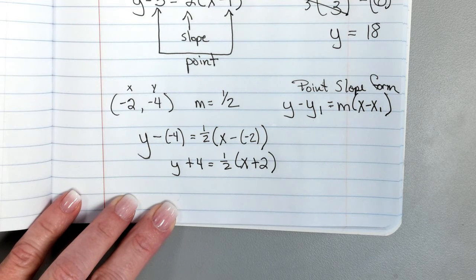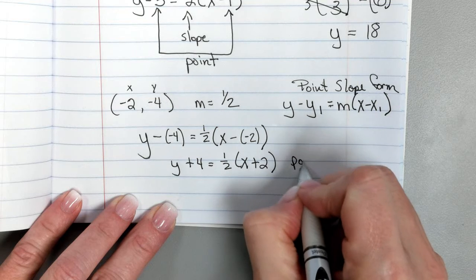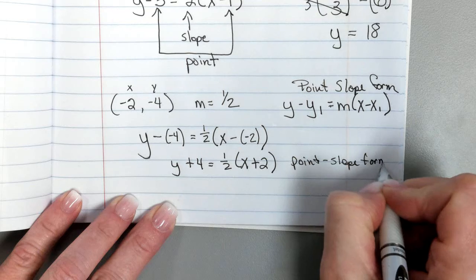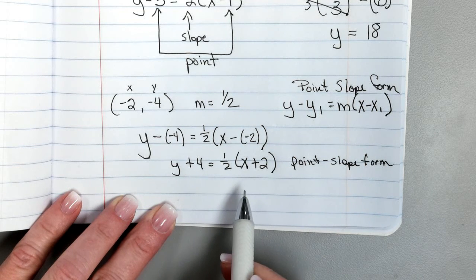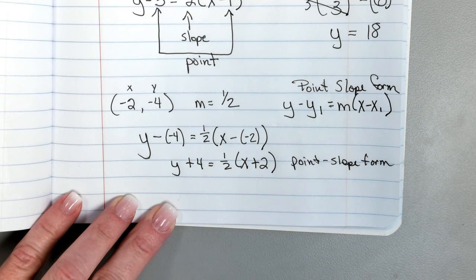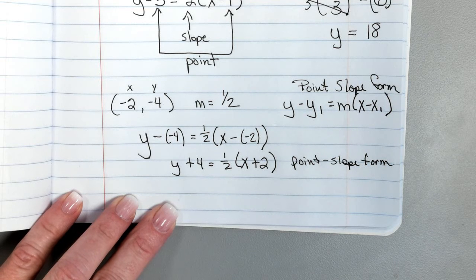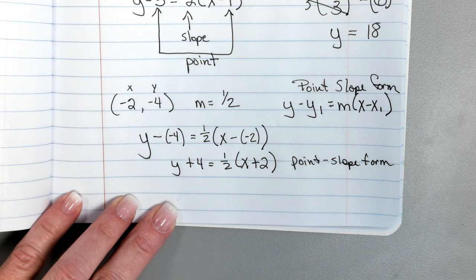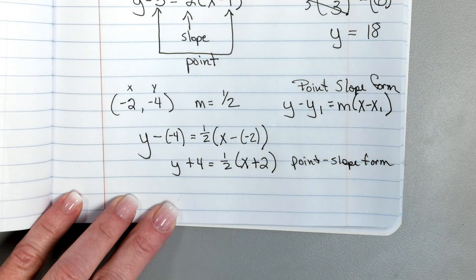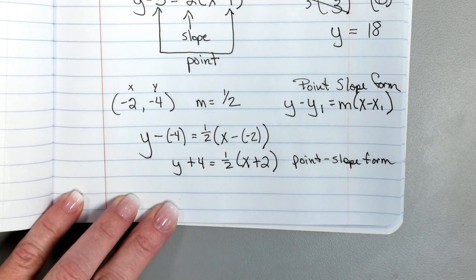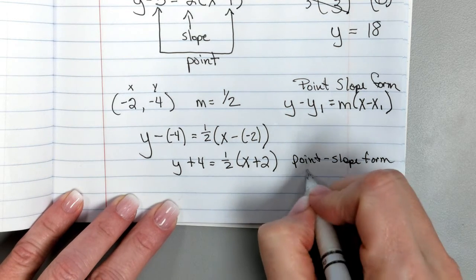Now I would go ahead and clean that up. I wouldn't leave it as minus and negative because minus and negative is really what? Plus positive. So if they wanted this point and this slope written in point-slope form, I would write y plus 4 equals 1/2 times x plus 2. If that's all they asked for, that's written in point-slope form.